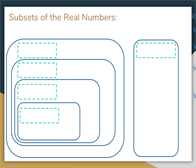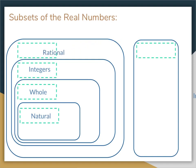The most basic set of numbers is the natural numbers, which we'll talk about in a moment. Then we have whole numbers — all natural numbers are whole numbers, but not all whole numbers are natural numbers. Then we have integers. All of those are going to fall under the category of rational numbers. Completely separated from the rational numbers are the irrational numbers. A number is either going to be rational or irrational, but it can't be both.